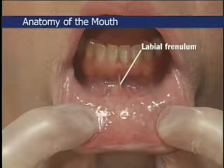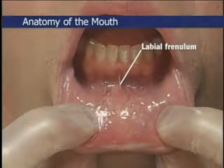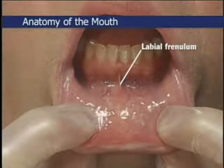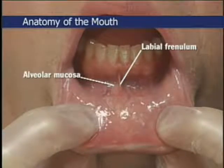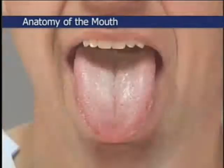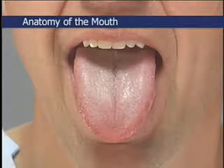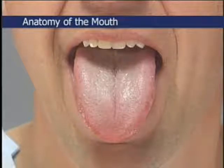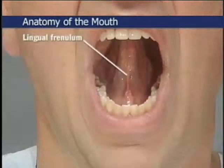A midline mucosal fold called a labial frenulum connects each lip with the gingiva. A shallow gingival sulcus between the gum's thin margin and each tooth is not readily visible. Adjacent to the gingiva is the alveolar mucosa, which merges with the labial mucosa of the lip. The dorsum of the tongue is covered with papillae giving it a rough surface; some of these papillae look like red dots, which contrast with the thin white coat that often covers the tongue.